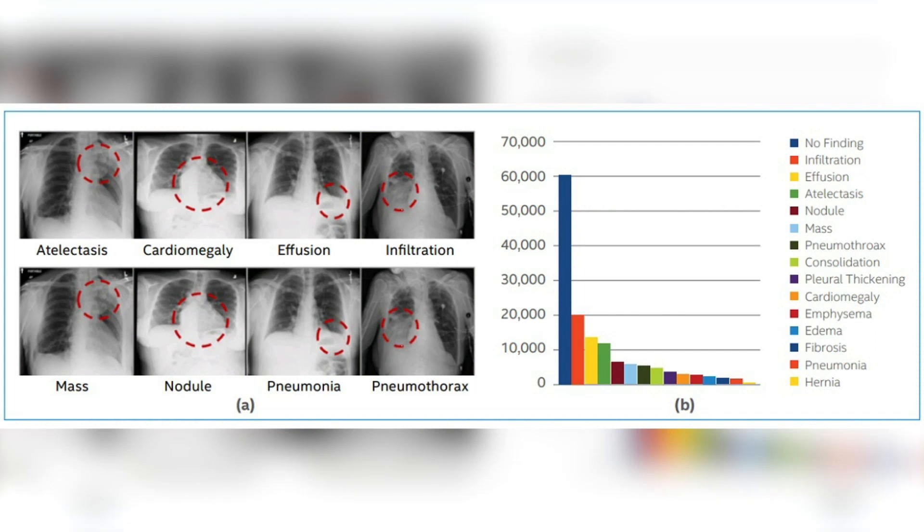What do we mean by imbalanced? Think of medical image data sets — they're mostly composed of normal samples, for example, a healthy set of lungs. And there's only a small percentage of abnormal ones, say if there's a lung disease present. Because most classifiers focus on learning the largest classes, it can affect training of machine learning classifiers in a negative way, leading to poor classification accuracy and diagnosis.